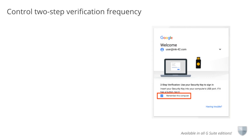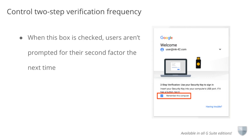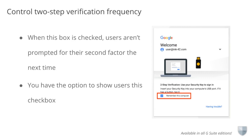Now that we've covered managing security keys for two-step verification, let's talk about managing how frequently your users will be prompted for two-step verification. When a user signs into their G Suite account, they're given an option to remember this computer. When this box is checked, they're not prompted for their second factor again, even if they sign out of their Google session and sign back in. As a part of this launch, we're giving all admins the option to show their users this checkbox so they can trust their device at the initial two-step verification and won't have to complete two-step verification every time they enter their password.